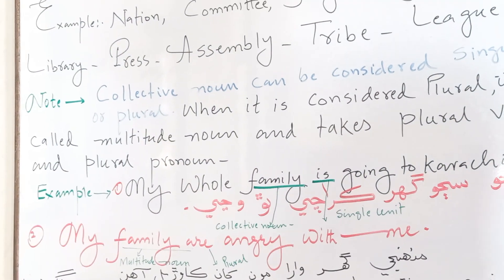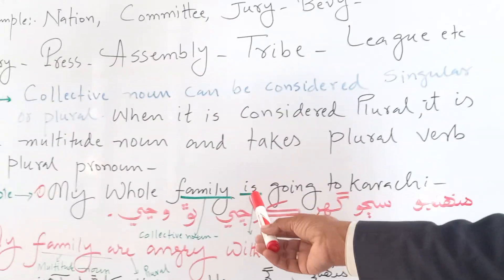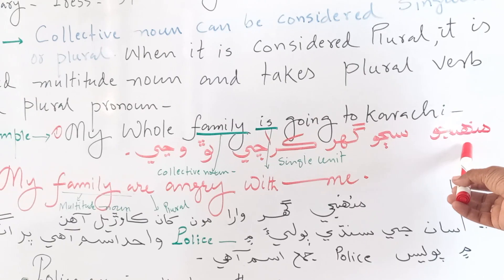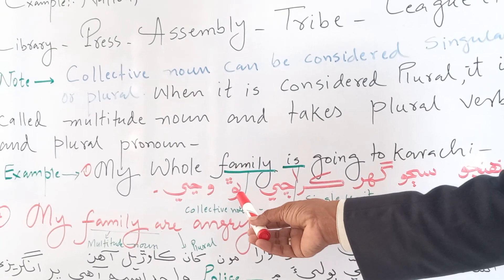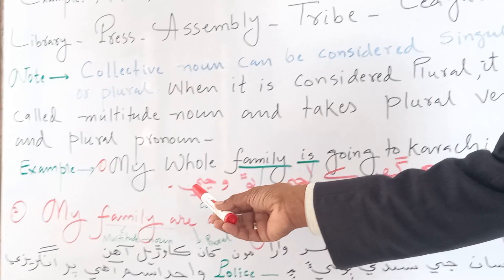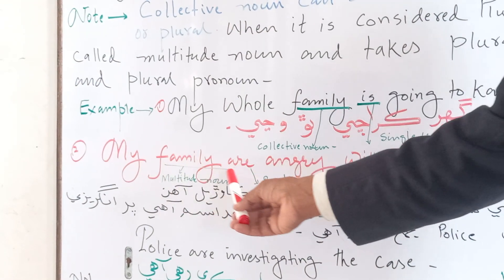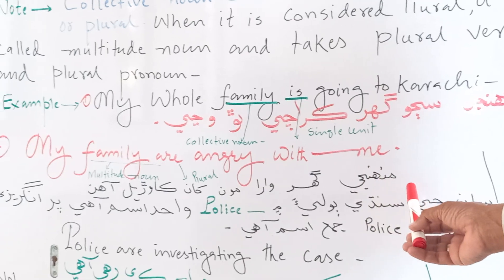For example: 'My whole family is going to work' — here 'family' is singular. But we can also say 'My family are angry with me' — treating the collective noun as plural.